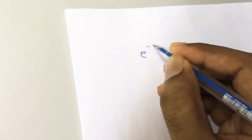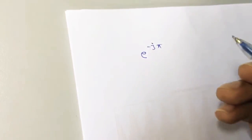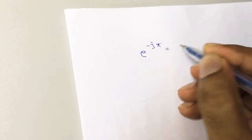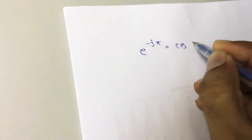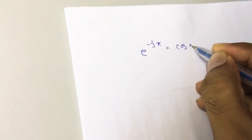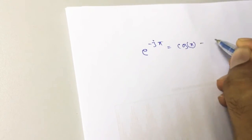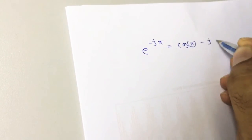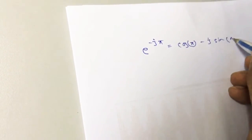How we can solve an exponential function in the calculator or mathematically. Let's say e^(-jπ). Mathematically we can write down cosine of π minus j sine of π.